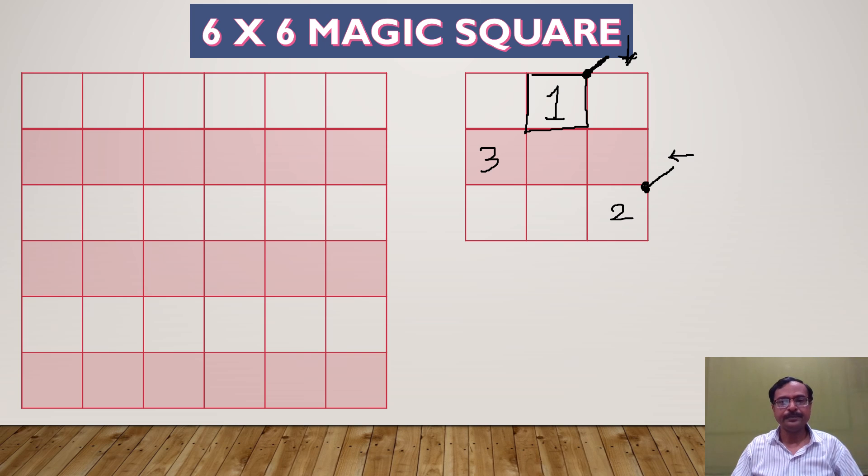Now this step is crucial. Mark the right hand top corner and if I draw a line now, it gets me in a block where there's already a number written. If it were an empty block, I would have written the next number there, but I'm trapped now. So whenever I get trapped, I write the next number below the previous one. So 3 is written here and I'll write 4 below that. Again mark the right hand top corner, draw a line - it takes me in an empty block, so I write the next number.